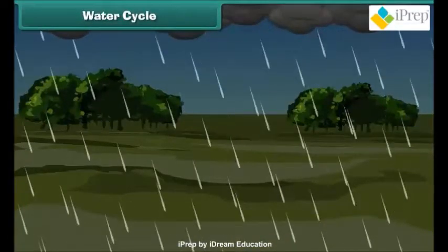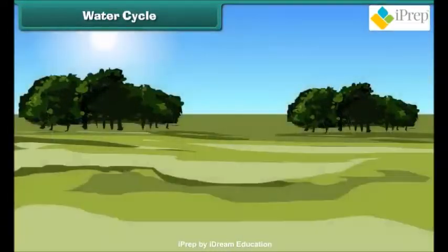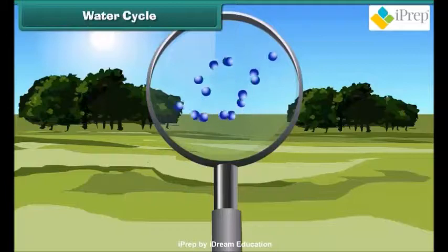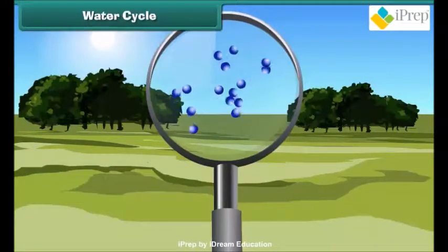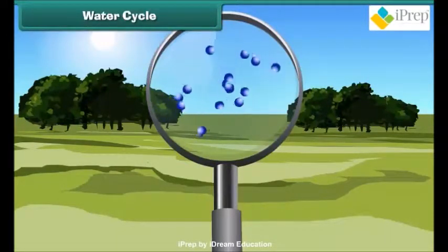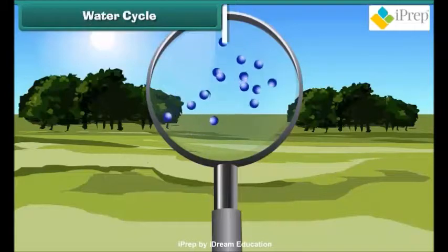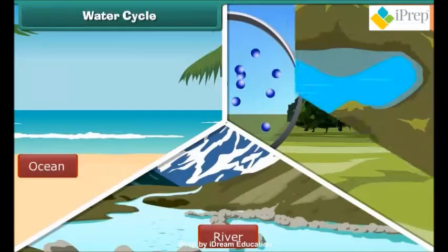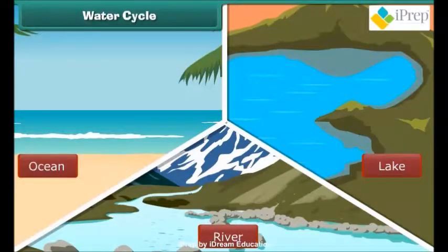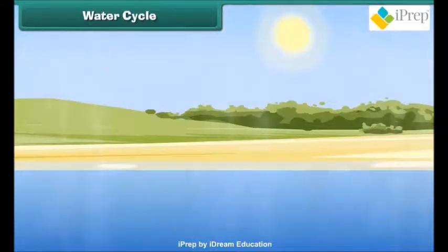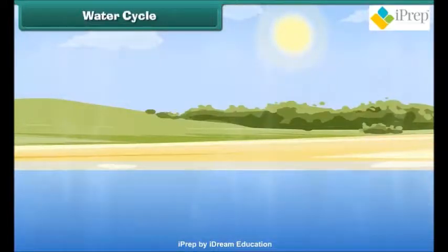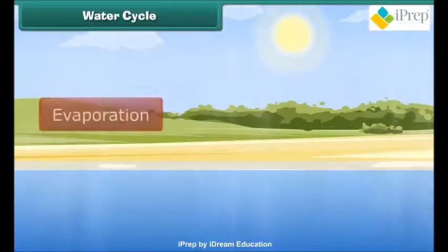Have you ever wondered where does all the water in rain come from? There is always a certain amount of water vapor in the atmosphere. It comes from the earth's surface water like oceans, rivers and lakes. The heat of the sun heats up the water from the surface of these reservoirs and changes water from the liquid state to the gaseous state. This is called evaporation.